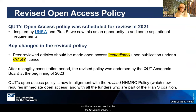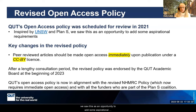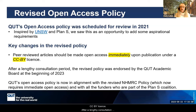In 2021 our policy was scheduled for another review, and inspired by the University of New South Wales policy and Plan S, we saw this as an opportunity to add some aspirational requirements. The key changes we introduced were that peer-reviewed articles were to be made available immediately upon publication and under a CC BY license.